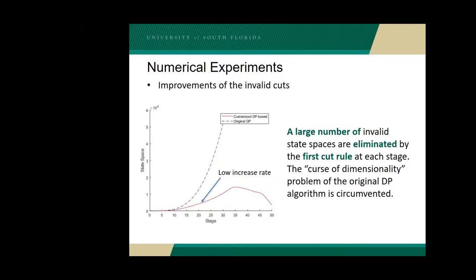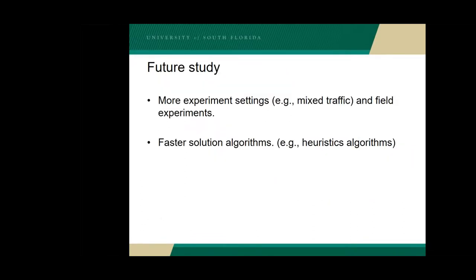However, the state space has a lower growth rate for the proposed algorithm, because a large number of invalid state spaces are cut by the proposed rules at each stage. Future studies can be conducted from two aspects. One is to conduct more experiments to further demonstrate the performance of the proposed model and algorithm — since we have an autonomous vehicle, field experiments can be conducted.